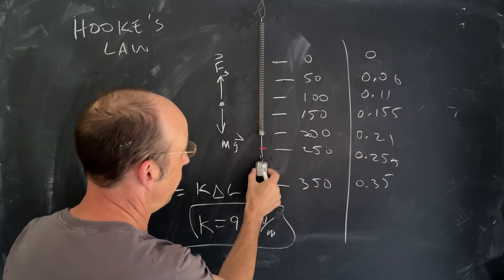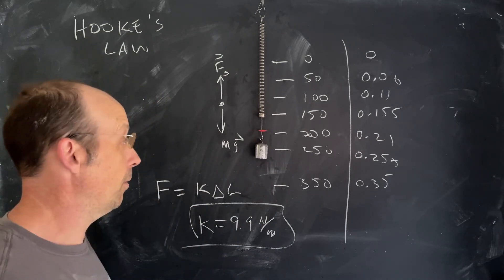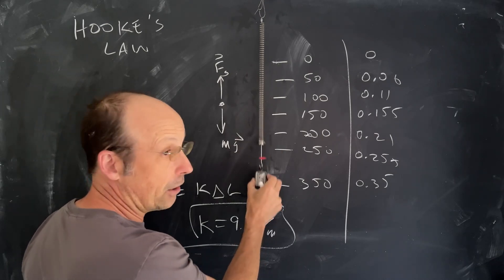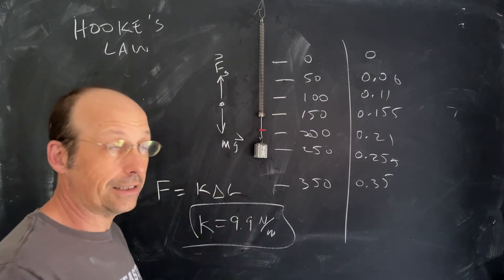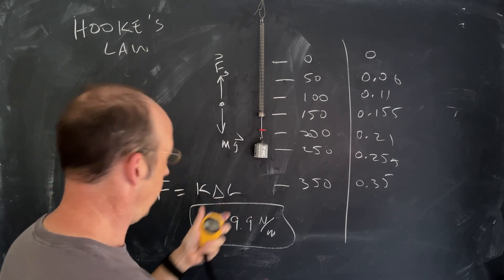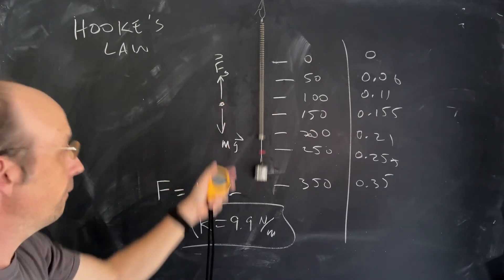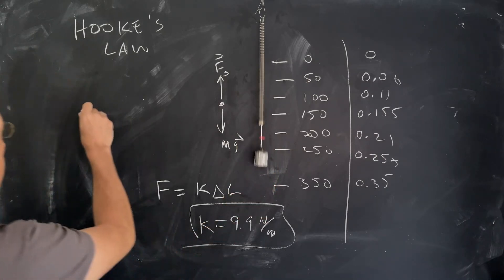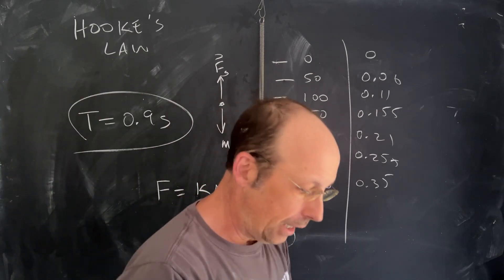I'll pull the 200 gram mass from its equilibrium at 0.21 m down to 0.25 m and let it go, so we use the same numbers when we model it. To find the period of oscillation, I'll time 10 oscillations and divide by 10. Timing it: 1, 2, 3, 4, 5, 6, 7, 8, 9, 10 — I get 9.08 seconds, so the period is approximately 0.9 seconds.